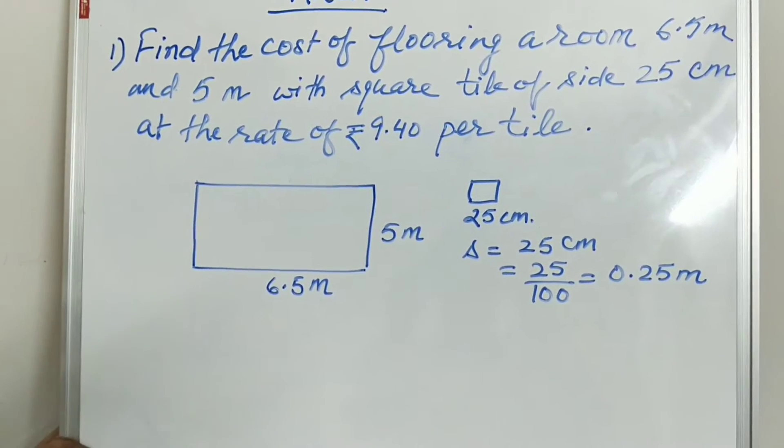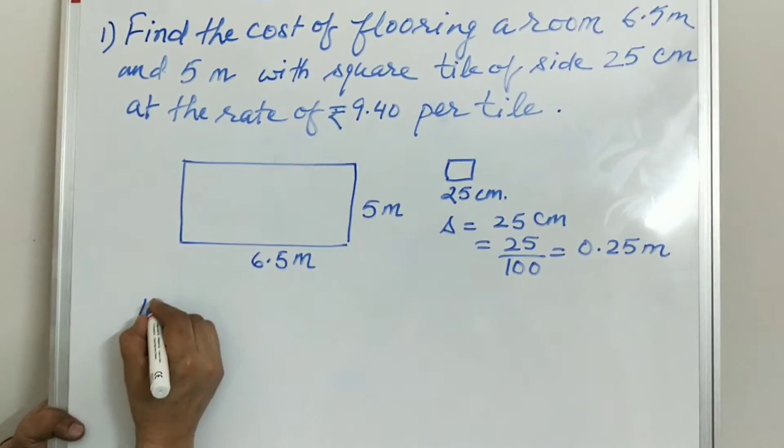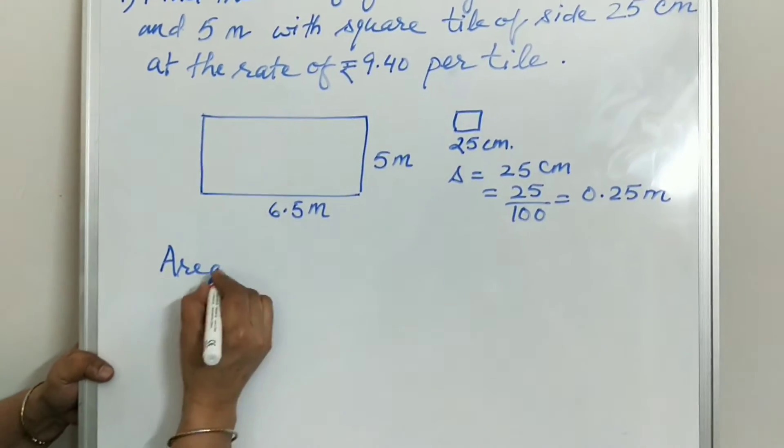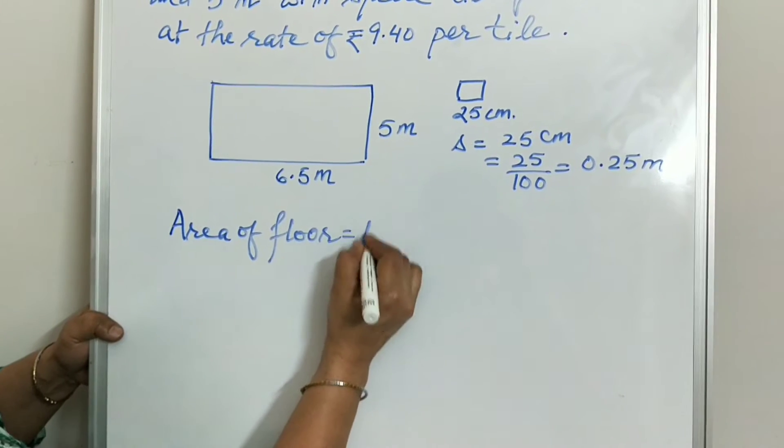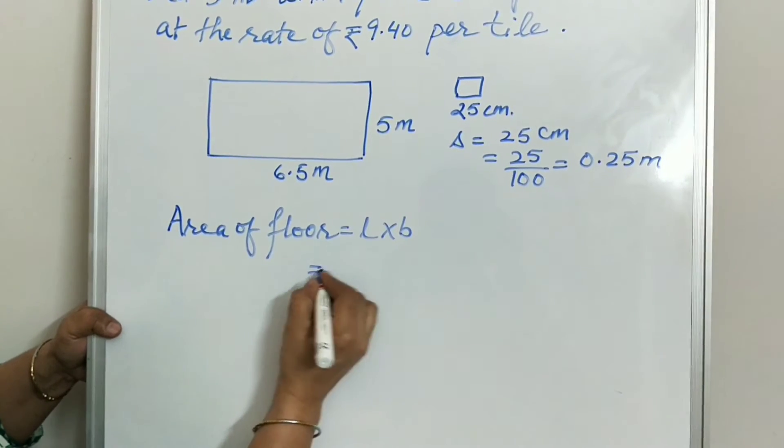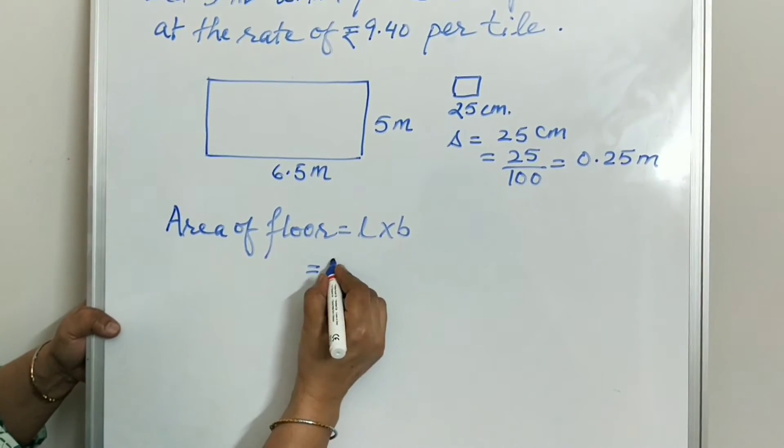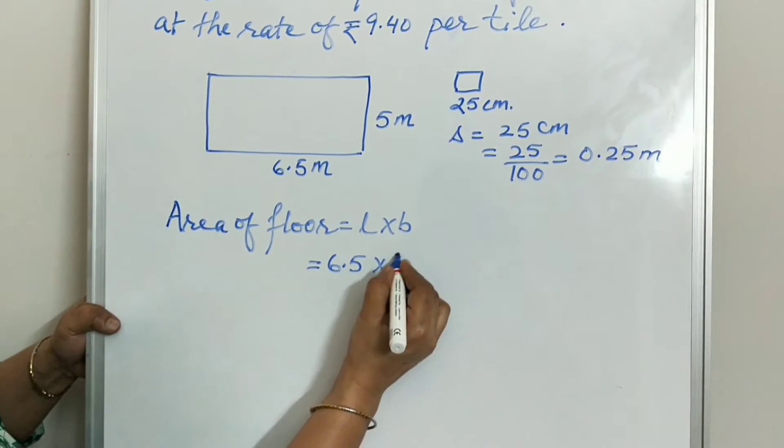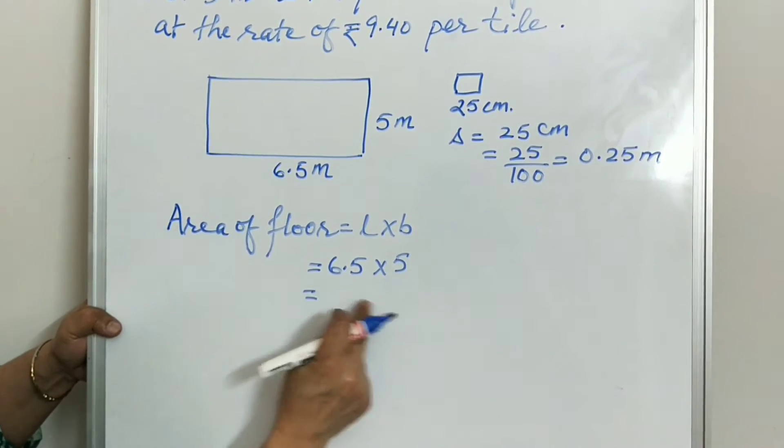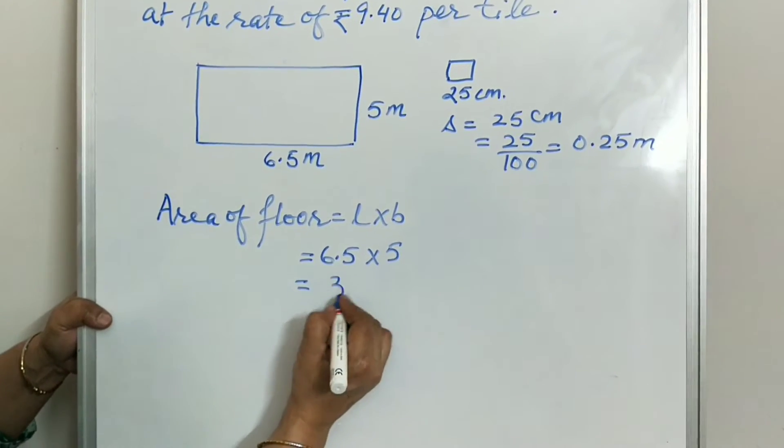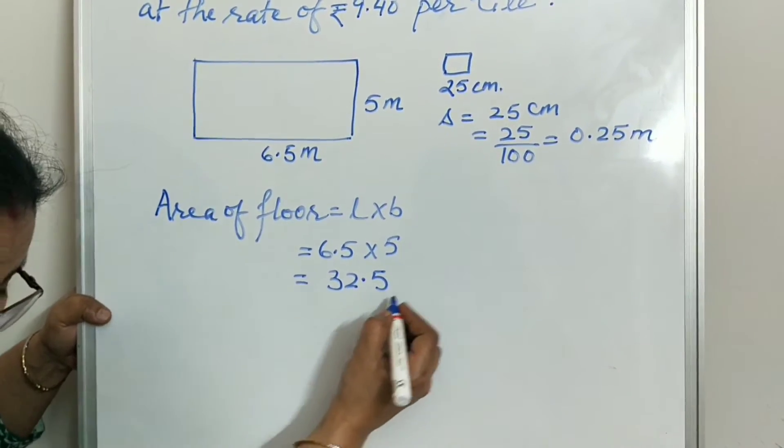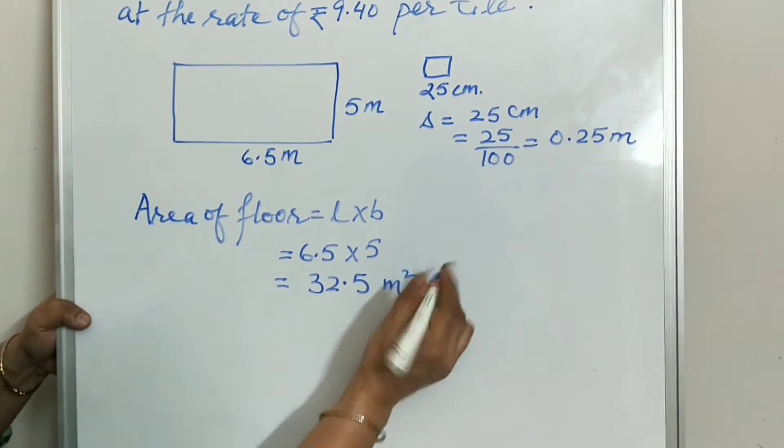We need to find area here, area of floor. Area of floor is equal to L into B. Value of length 6.5 and breadth is 5. When we multiply 6.5 multiply by 5, the answer is 32.5 meter square.